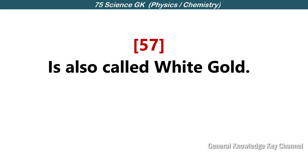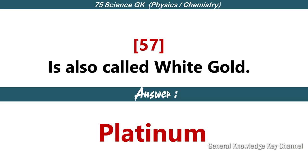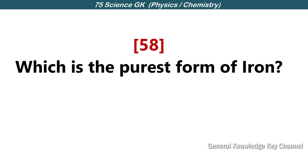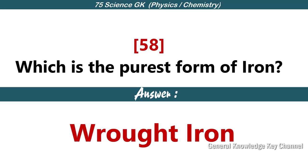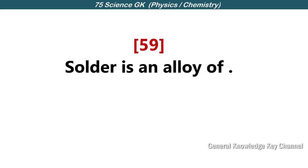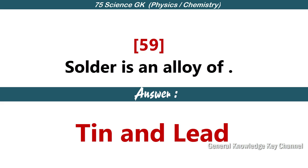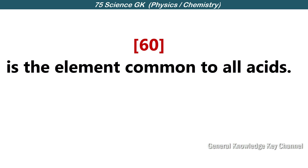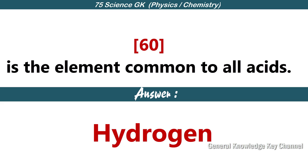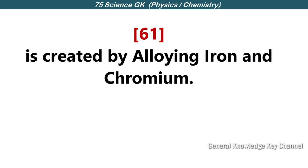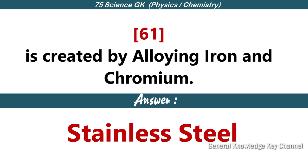Platinum is also called white gold. Which is the purest form of iron? Wrought iron. Solder is an alloy of tin and lead. Hydrogen is the element common to all acids. Stainless steel is created by alloying iron and chromium.